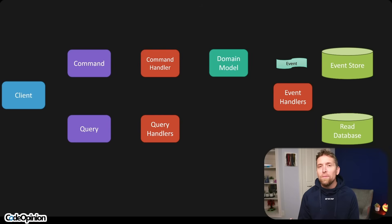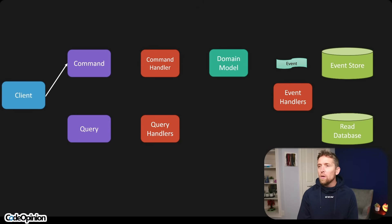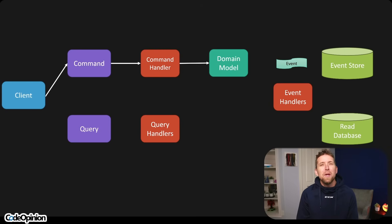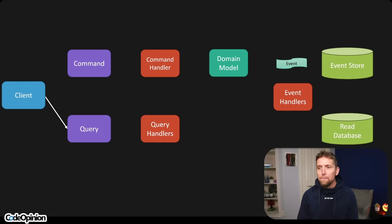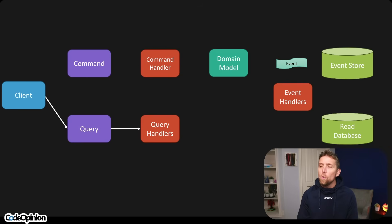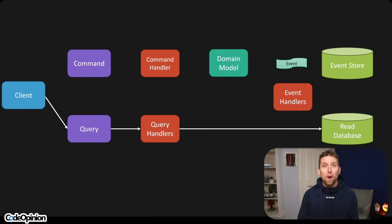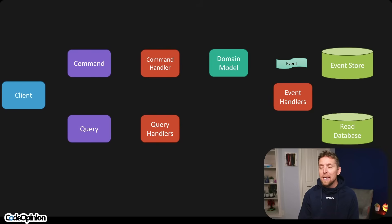Let's start with an example of eventual consistency that a lot of people struggle with, specifically with event sourcing and CQRS. We have our client make a request, call a command, there's some command handler processing that. We have some type of domain model that ultimately emits an event that we persist to our event store. Then our request goes all the way back — the command's done. The problem is that often we then have that client make a request to a query, to some type of read model hitting that read database. The problem is it's stale — it's not reflective of what that command did. So the client gets back stale data.